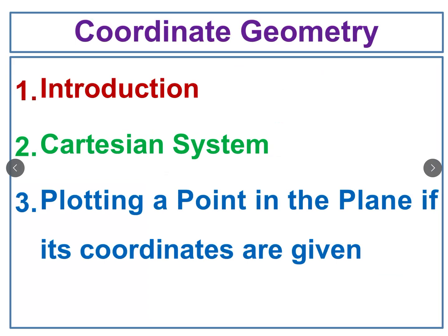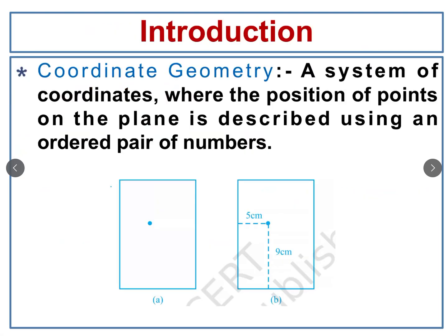Chapter number 3, Coordinate Geometry, is divided into three subtopics: introduction, then Cartesian systems, and third is plotting a point in the plane if the coordinates are given. In this first session we will try to cover the introduction part and Exercise 3.1. So let's start with the introduction part.